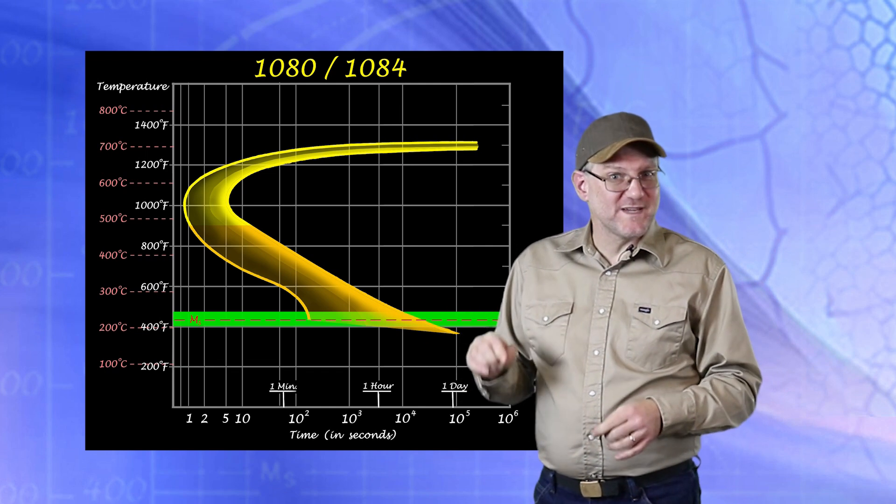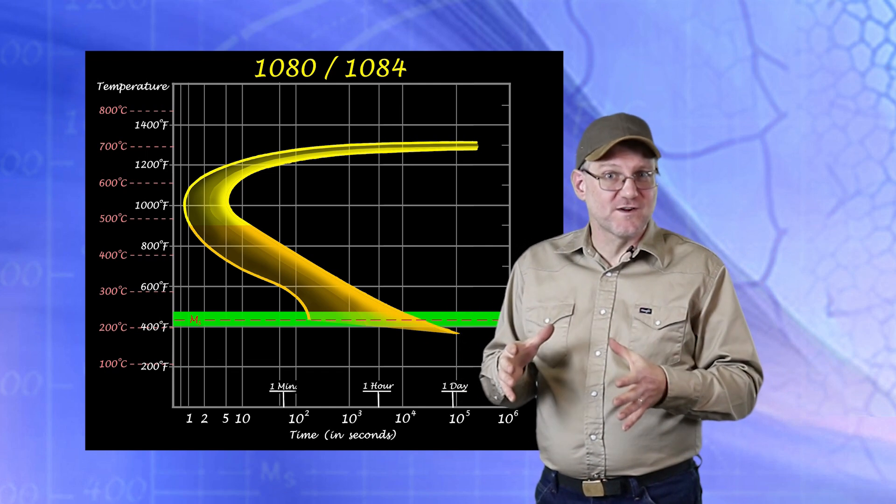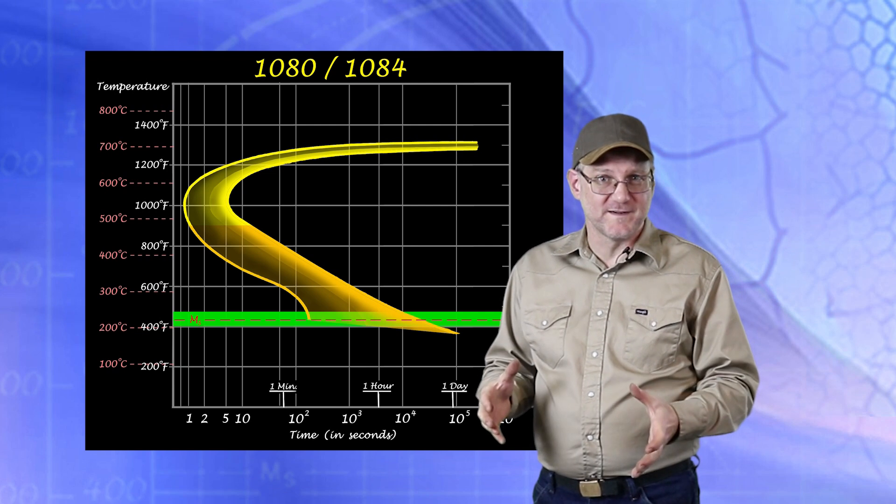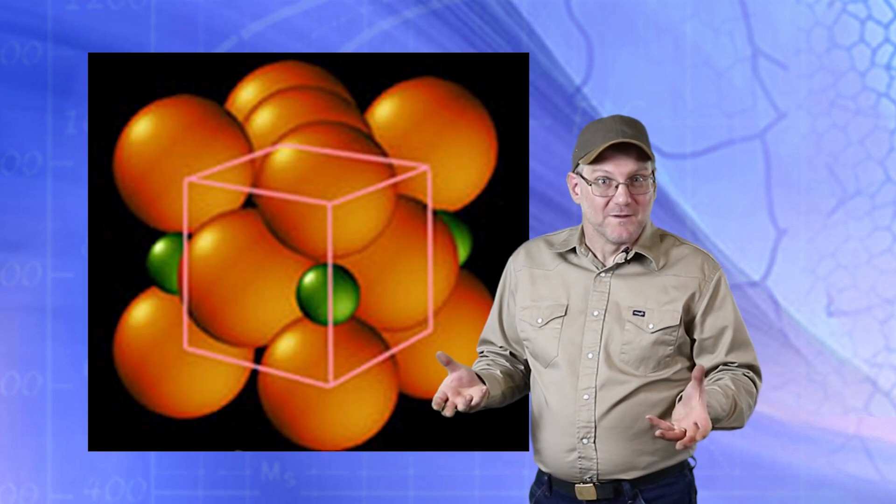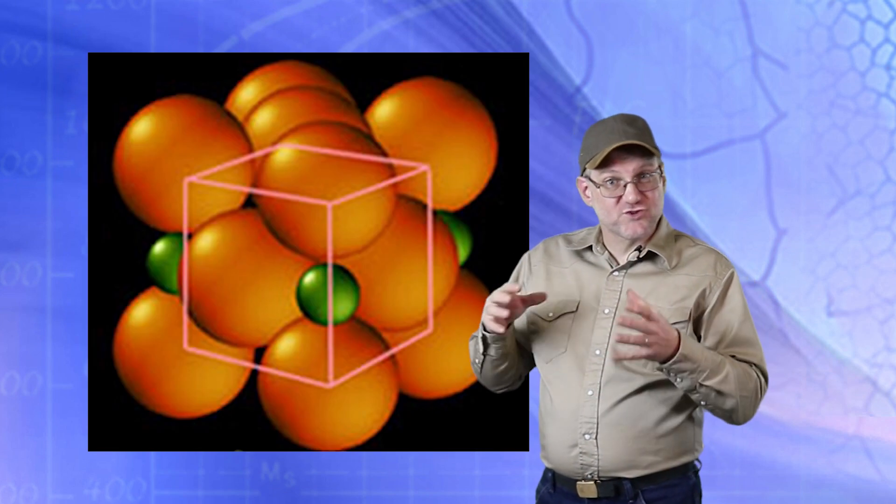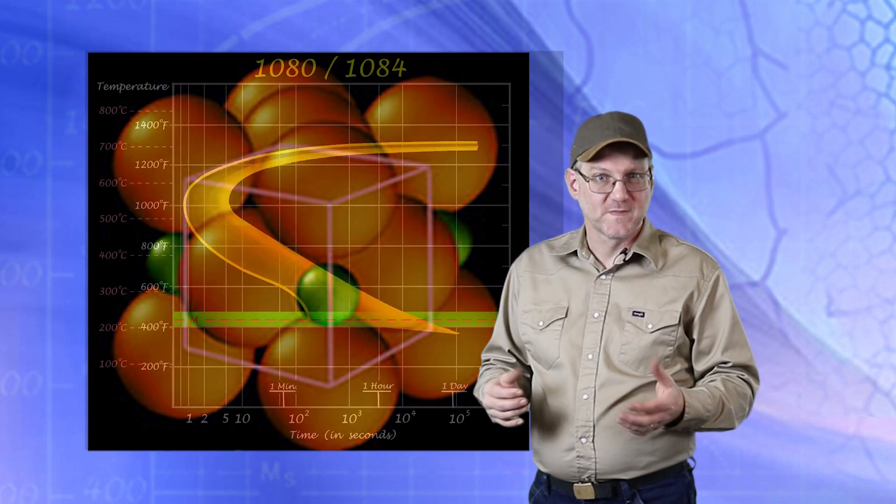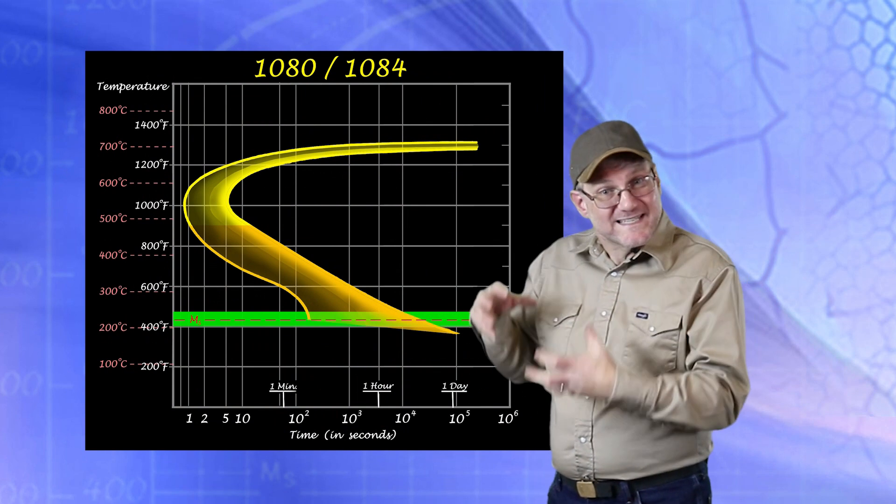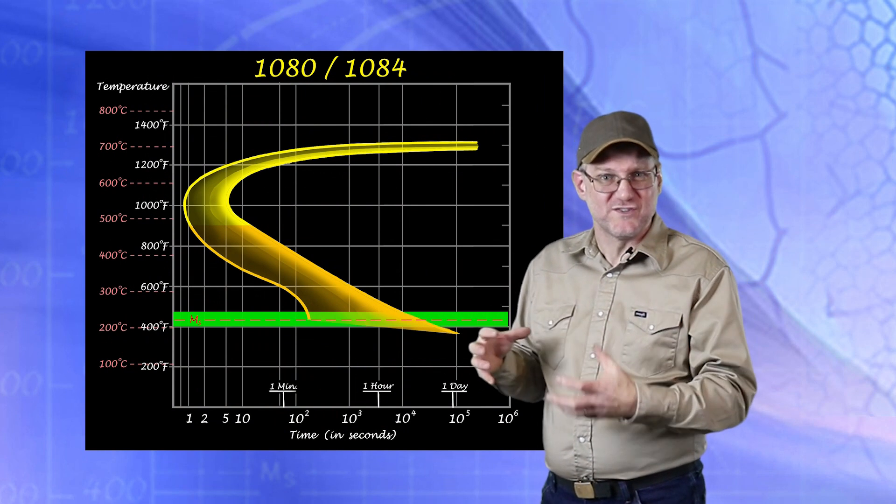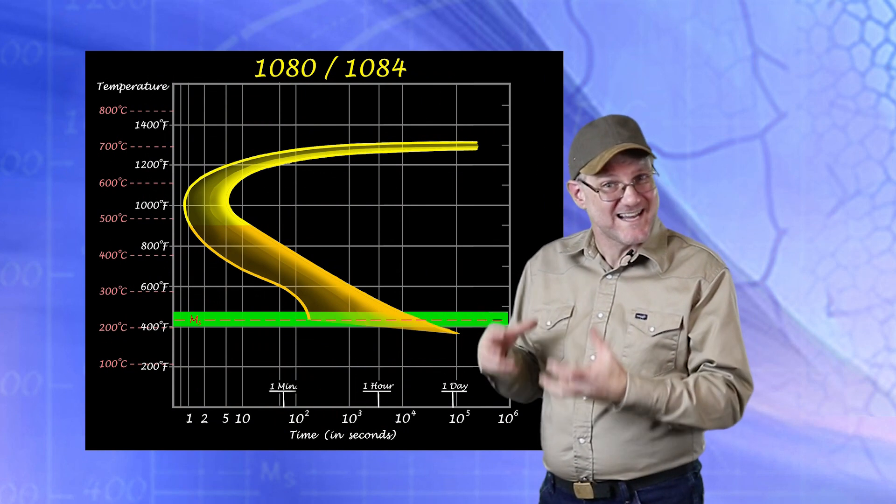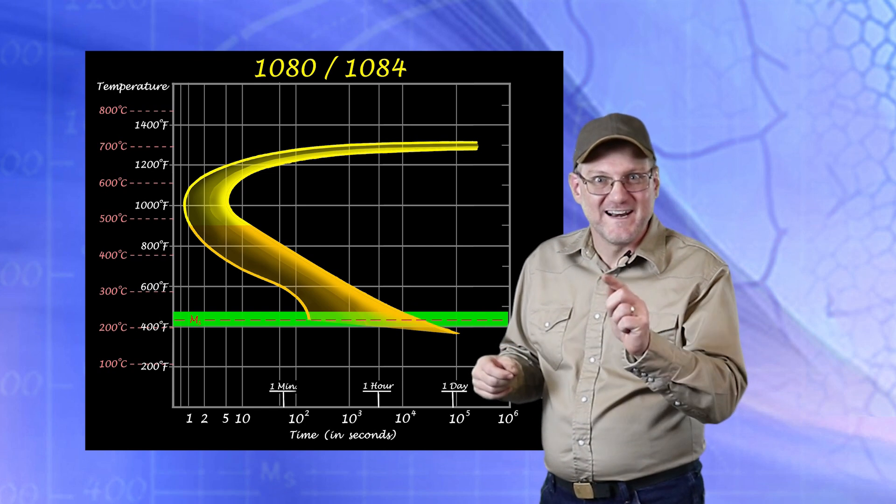Those face-centered cubic stacked atoms, they really need to go back to something body-centered. But there is a problem: there are carbon atoms trapped between the iron atoms, keeping them from returning to body-centered cubic. So as the cooling continues, strain energy builds until the crystalline lattice can take no more, and then it happens.